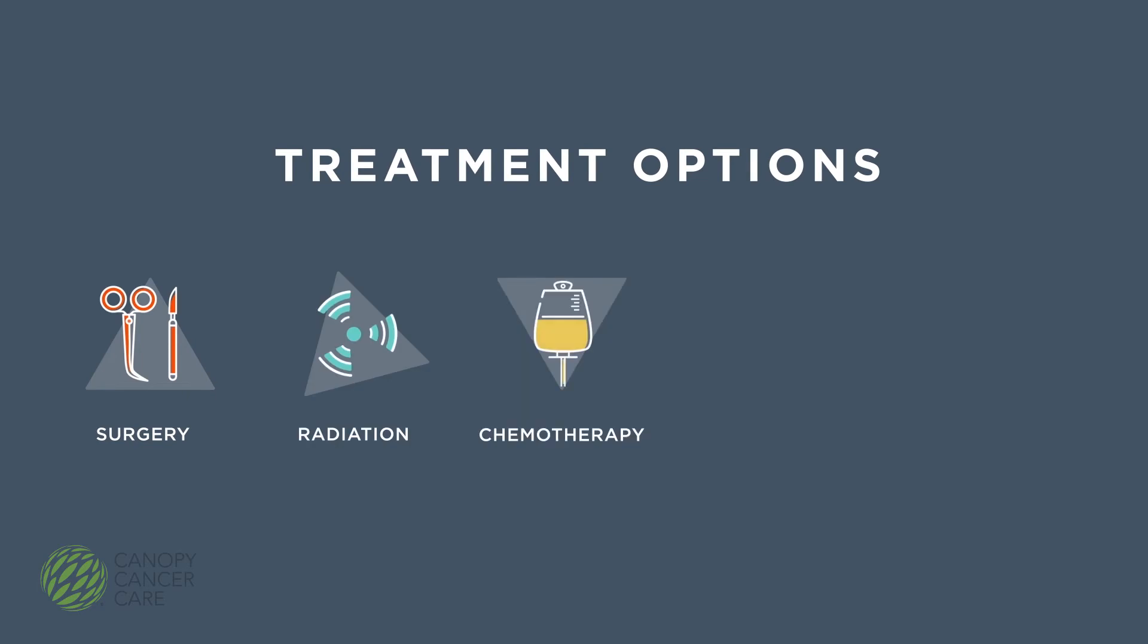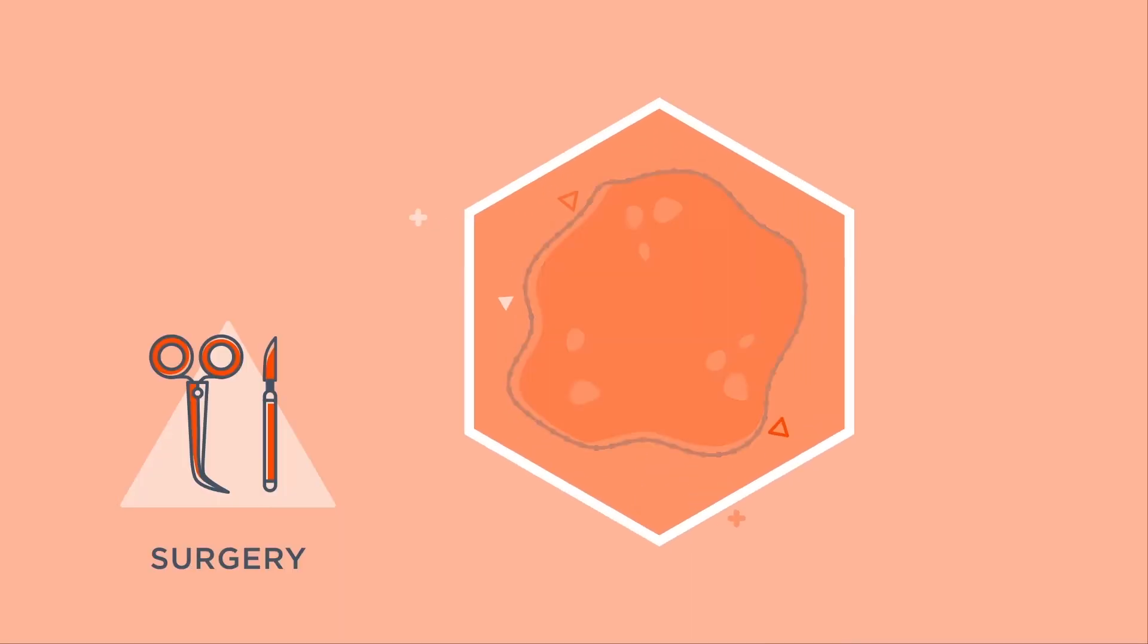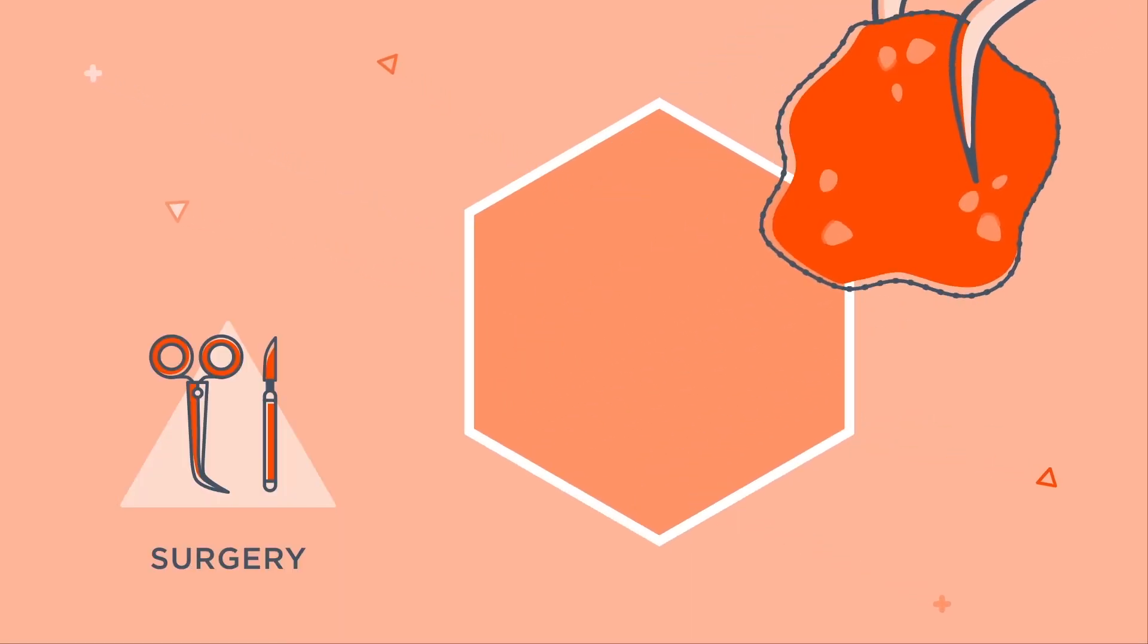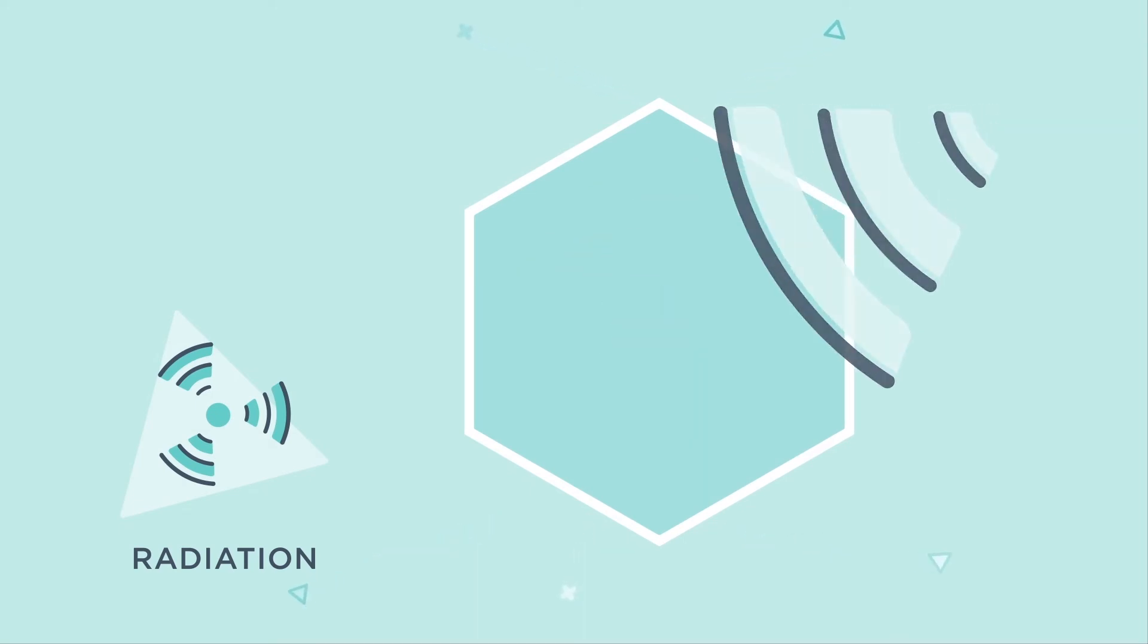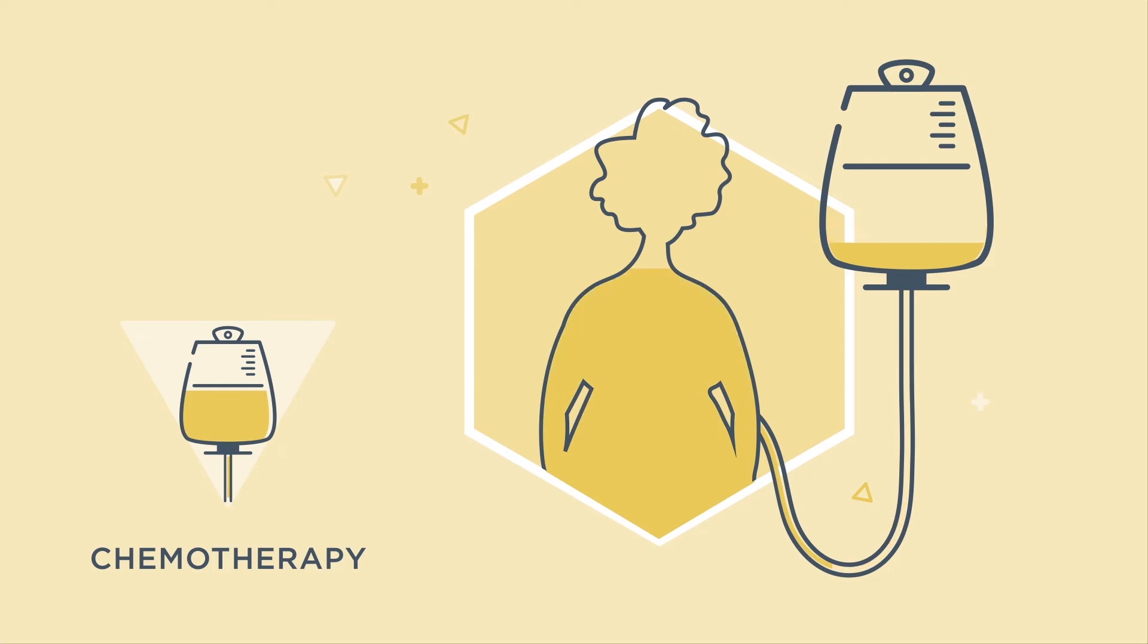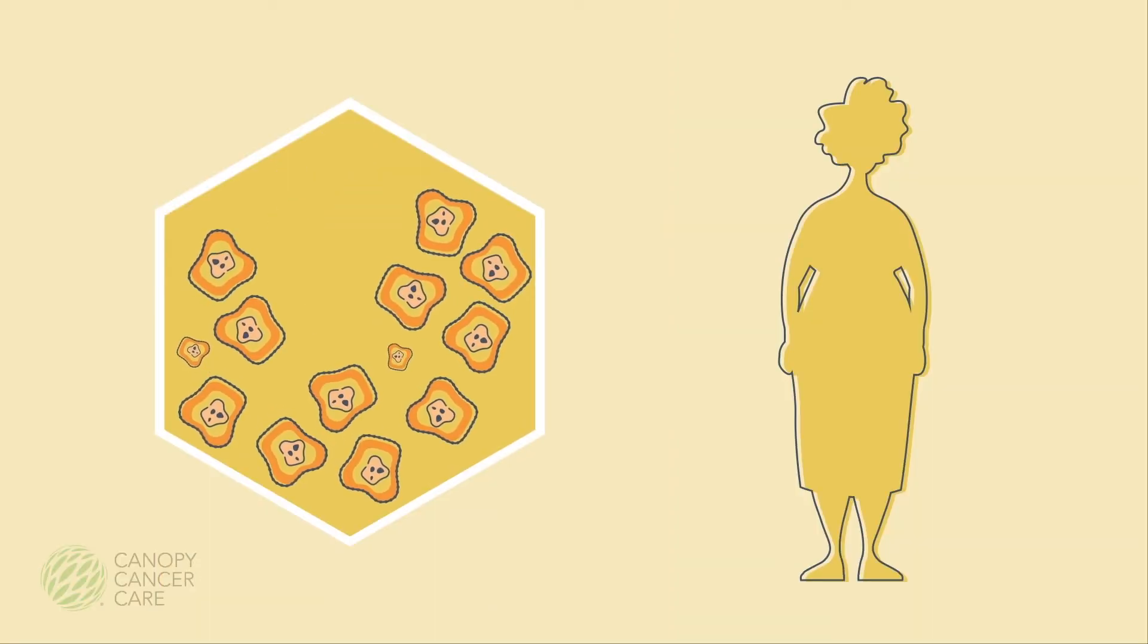Depending on the stage of your cancer, your doctor may use a standard method to initially treat your tumour, such as surgery to remove the tumour, radiation used in small doses to kill the cancer cells in a precise area of your body, or chemotherapy to kill rapidly dividing cells throughout your body if the cancer has spread.